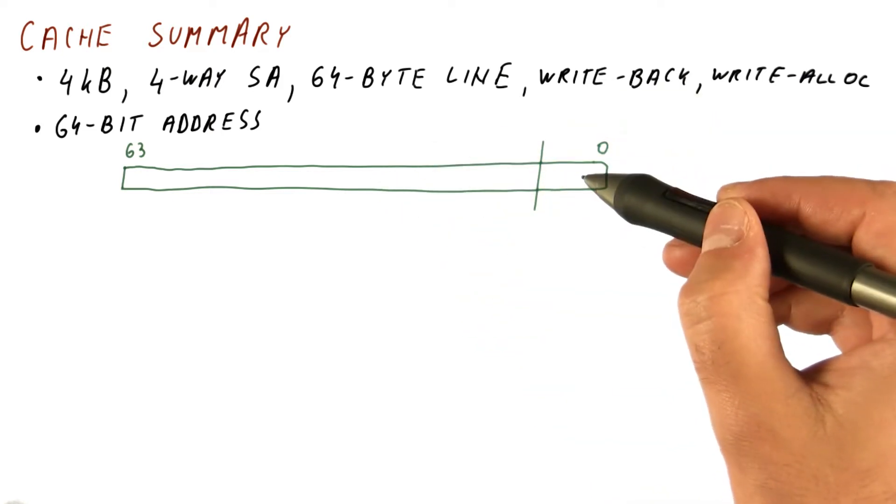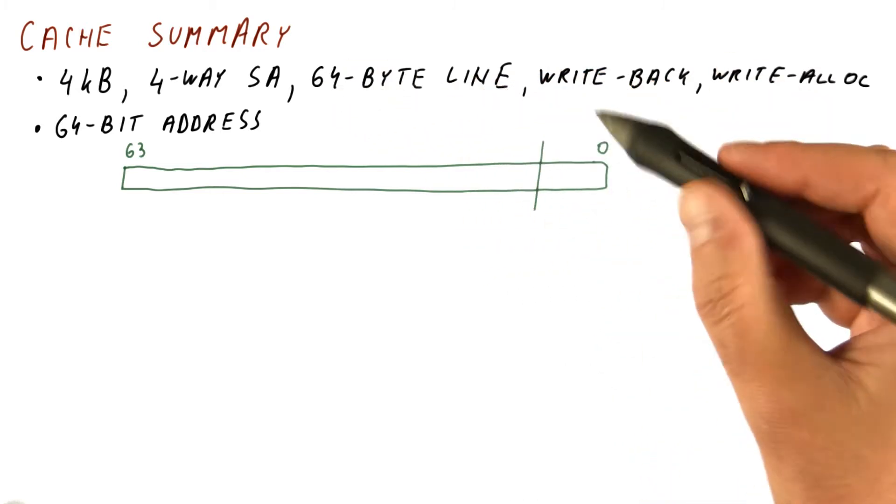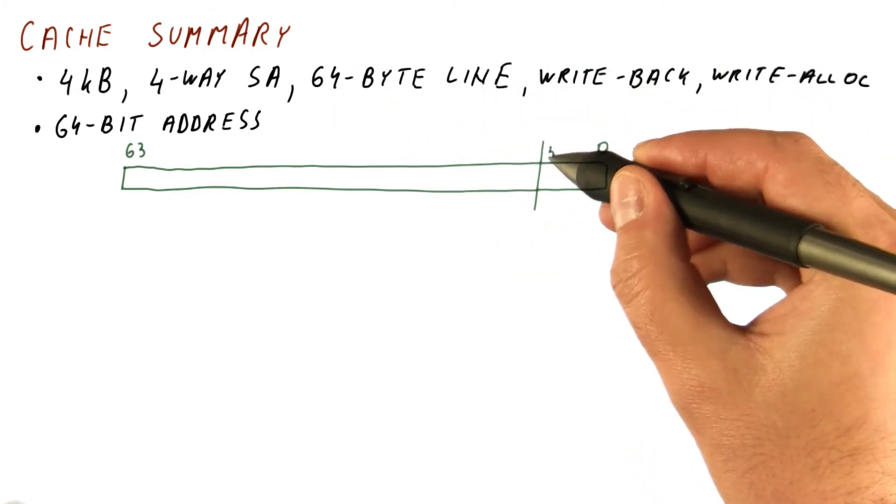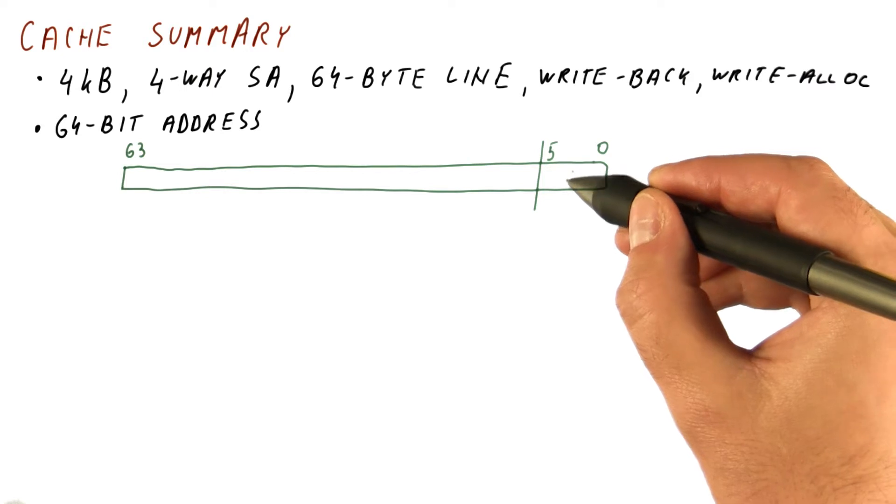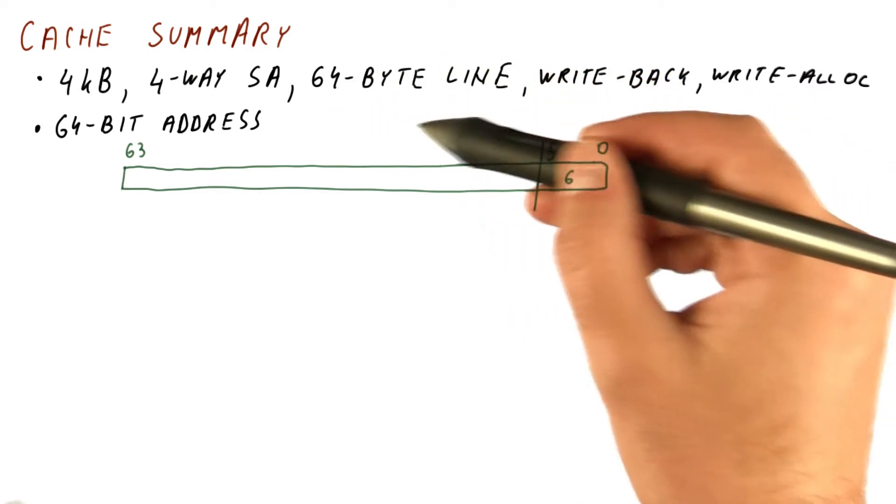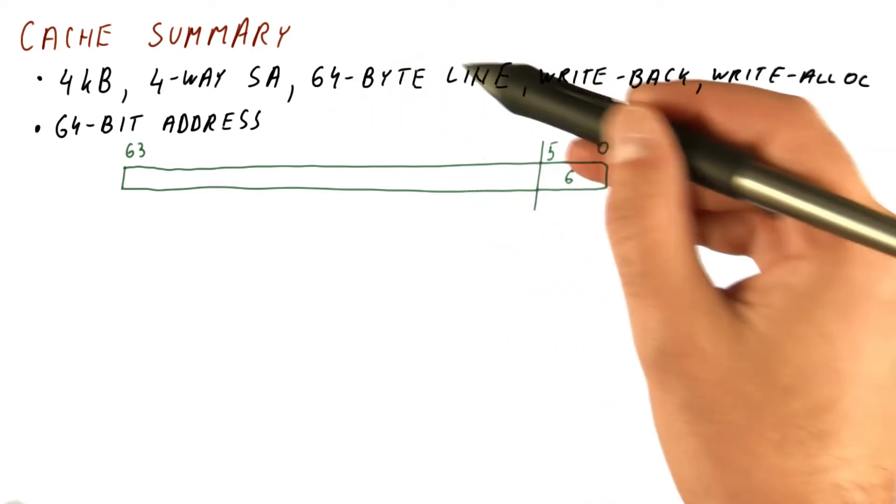First, for offset bits, it's a 64 byte line. So we need six bits, bits zero through five. There are six of them that are going to tell us where in the cache block we are.